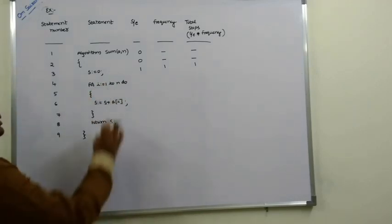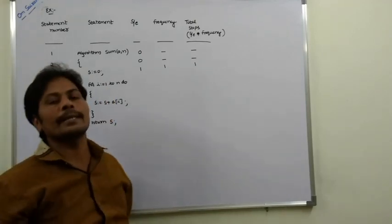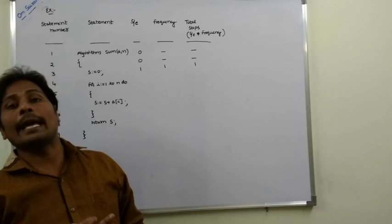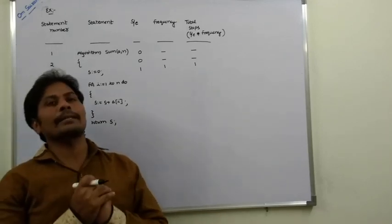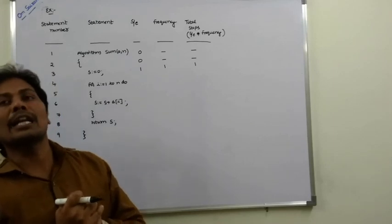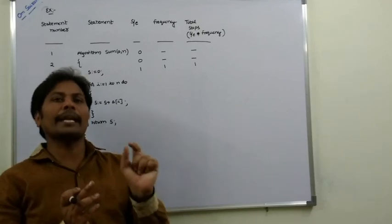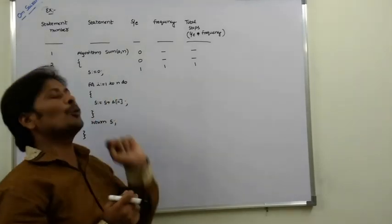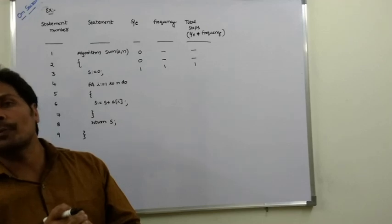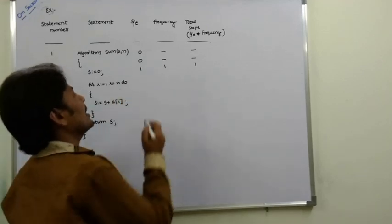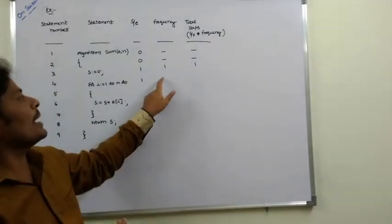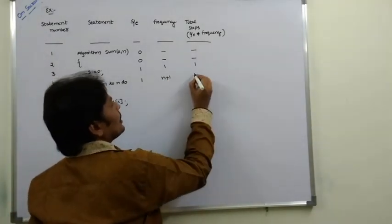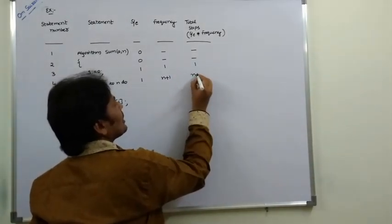For the loop 'for i = 1 to n', this loop is executed n+1 times — n times successfully, but the condition is also checked one extra time when it fails at n+1. So it is a valid statement with S/E = 1, frequency = n+1, and total steps = 1 × (n+1) = n+1.